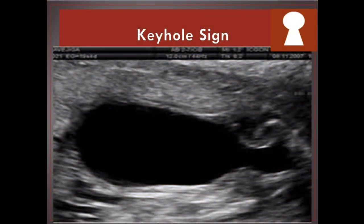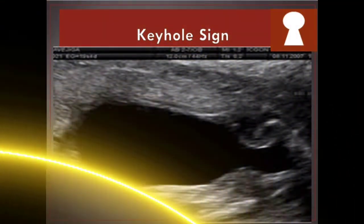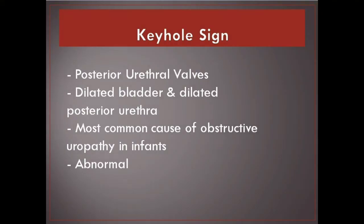Keyhole sign. Posterior urethral valves — dilated bladder and dilated posterior urethra. Most common cause of obstructive uropathy in infants. Abnormal.